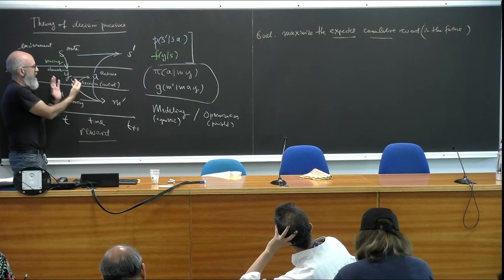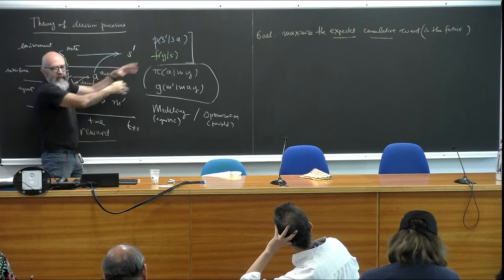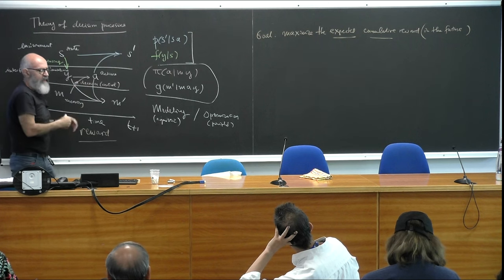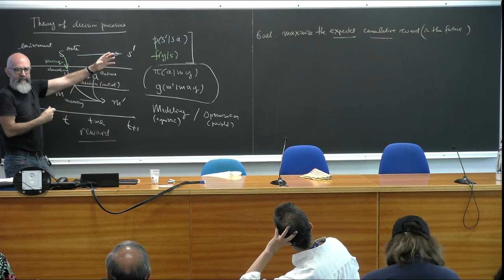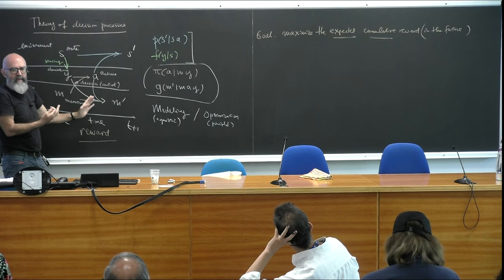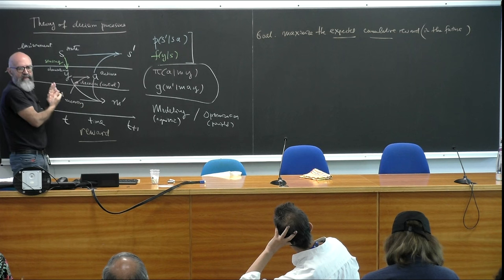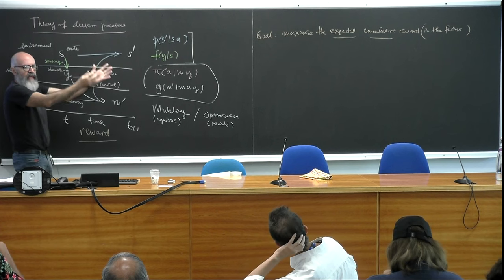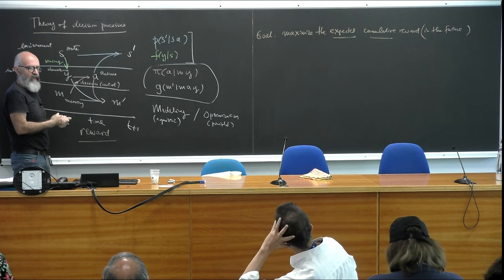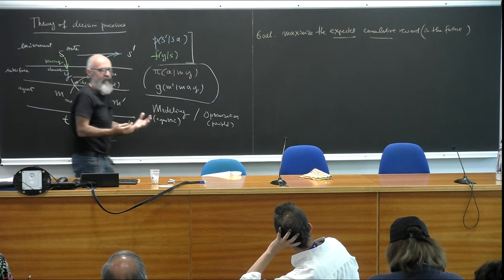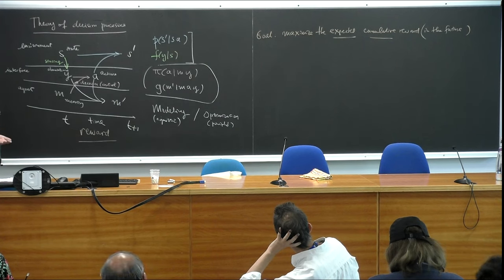The goal of the optimization process is to maximize the expected cumulative reward in the future. Given your decisions, there will be a trajectory in the abstract space of external and internal states, and you collect a sum of rewards — maybe the reward comes only at the very end. The fact that you can encode for long-term rewards makes the problem extremely challenging: short-term rewards lead to greedy behavior, while long-term rewards require planning and the ability to forecast what will happen as a consequence of current actions.